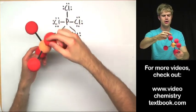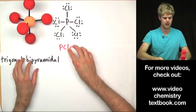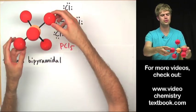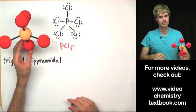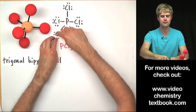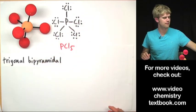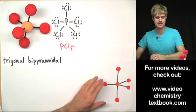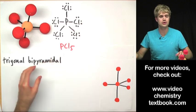The shape of this molecule is called trigonal bipyramidal. You get a trigonal bipyramidal molecule whenever you have a central atom surrounded by five other atoms. Now let's talk about the angles of the bonds in this molecule, which is something you often get asked about when doing VSEPR shapes.